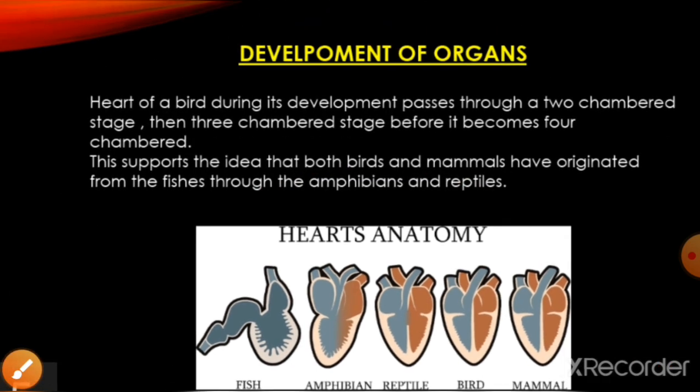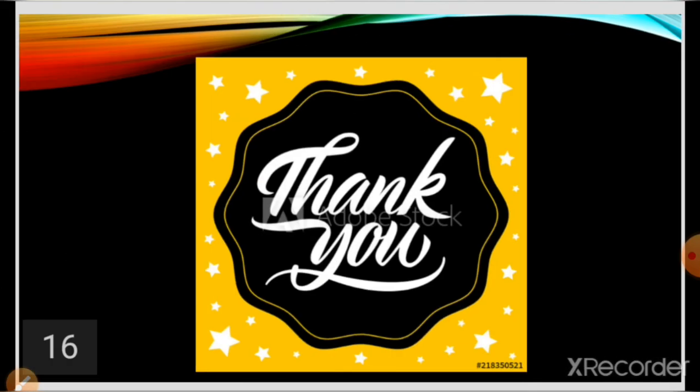To summarize embryological evidences: we have studied similar early development of vertebrates, similar vertebrate embryos, temporary embryonic structures, and Haeckel's ontogeny repeats phylogeny. These evidences confirm that complex life forms have all originated from simple forms and common ancestors through evolution. In the next class, we will study morphological and anatomical evidences in favor of organic evolution. That's all for today — thank you very much, and have a nice day.